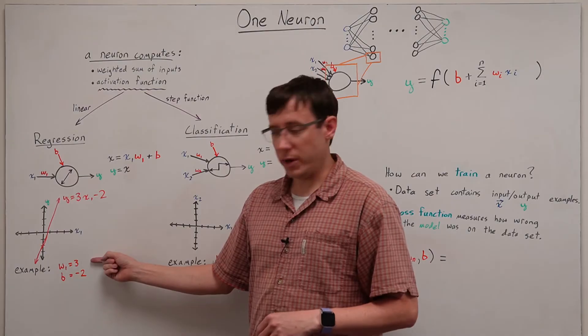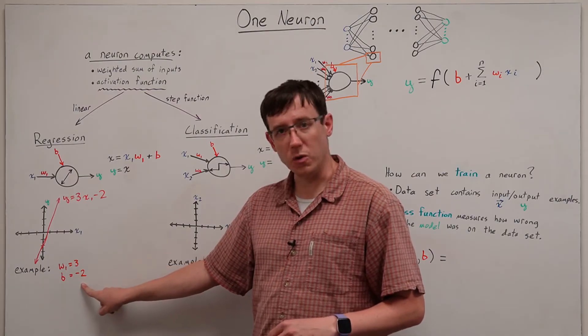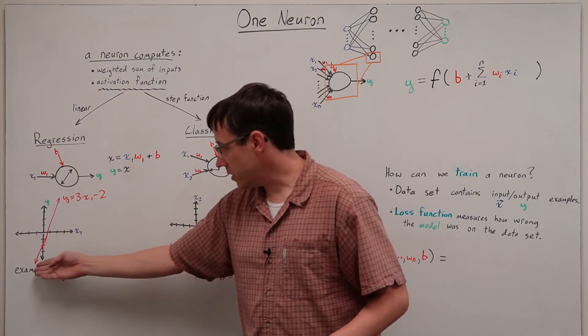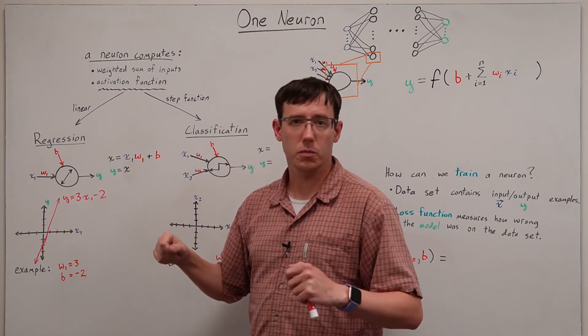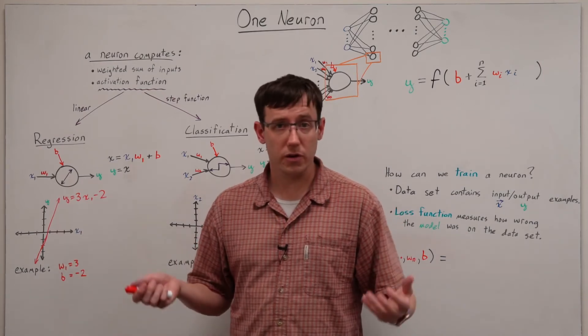So when w1 is 3 and b is minus 2, this neuron is computing the function y equals 3x1 minus 2. So how is this related to regression?